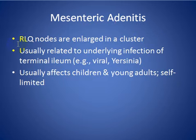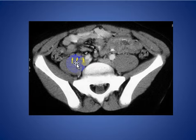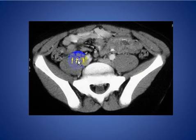Mesenteric adenitis: right lower quadrant nodes are enlarged in a cluster, usually related to underlying infection in the terminal ileum, either viral or Yersinia. It usually affects children and younger adults and is self-limited. Here you see a patient with mildly enlarged lymphadenopathy anterior to the right psoas muscle in the right lower quadrant.